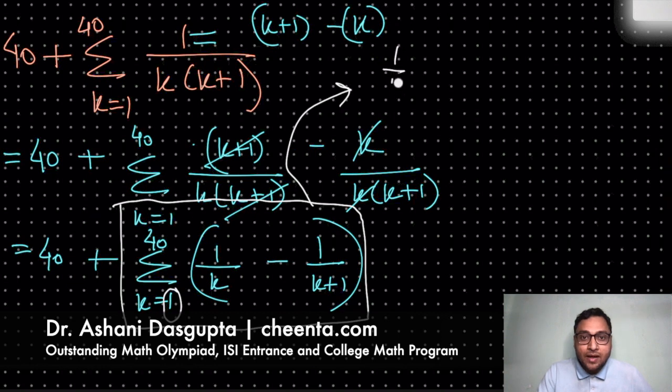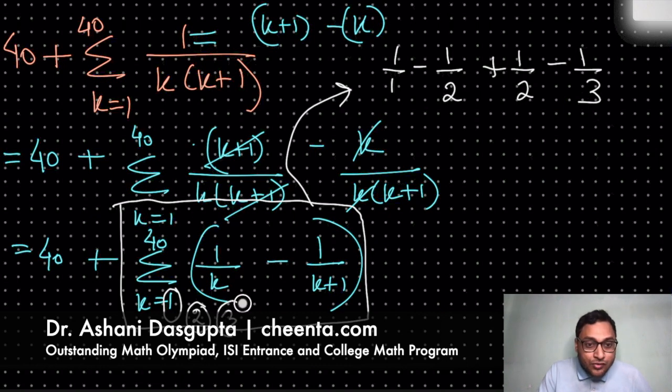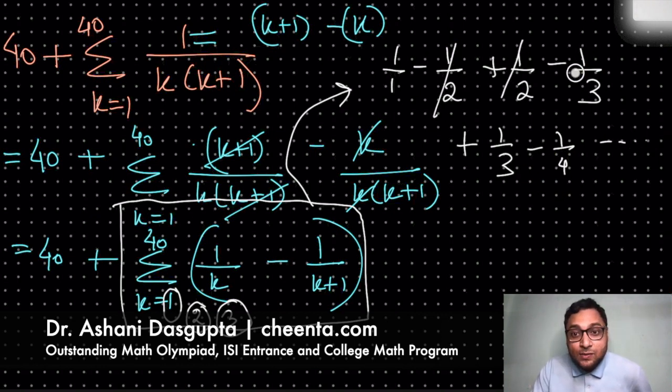First let's plug in k equal to 1. So we'll have 1 by 1 minus 1 by 2. Then I'll plug in k equal to 2. So I have 1 by 2 minus 1 by 3. Then I plug in k equal to 3, and I have 1 by 3 minus 1 by 4. And it will continue. And you can see these pieces will cancel off. And only the last piece will remain. So that is 1 by 41.